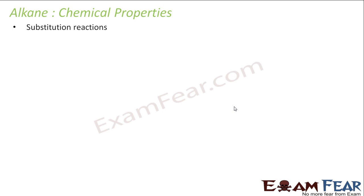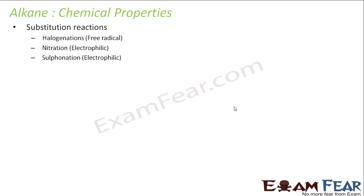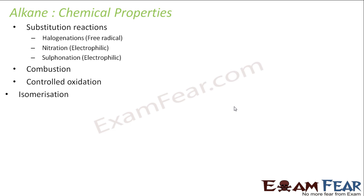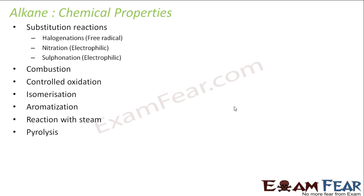We have understood how to prepare alkanes and what are the physical properties of alkanes. Now let's understand the chemical properties of alkanes. We will talk about substitution reactions — halogenation, nitration (electrophilic), sulfonation, combustion reactions, controlled oxidations, isomerization, aromatization, reaction with steam, and pyrolysis.